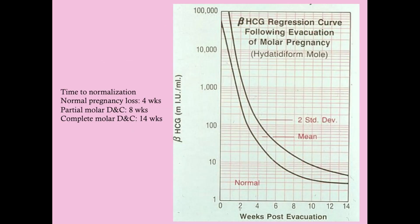The time to HCG normalization: after a normal pregnancy loss, HCG should normalize within four weeks. After a partial molar D&C, normalization should occur within eight weeks. After a complete molar D&C, because the HCG level is so much higher, it should normalize in about 14 weeks. Often it goes quicker than this, but these are the late limits of normal.